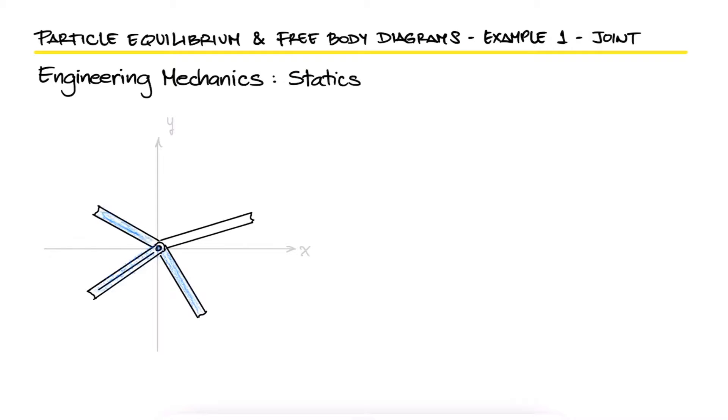The members of a truss are pin connected at joint O. What should the forces F1 and F2 be for equilibrium?